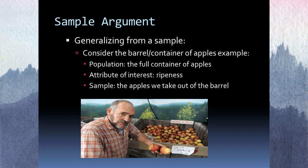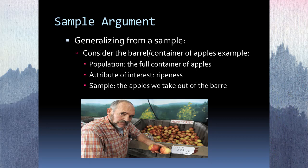In the barrel of apples example, we take out three or five apples — that's the sample, because that's what was telling us about the rest of the barrel. The full container of 100 apples is the population. When you take your sample, it's actually being pulled from the population, but you're taking a smaller proportion of the population to help you figure out about the population.